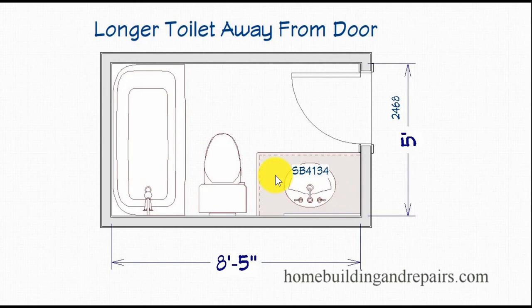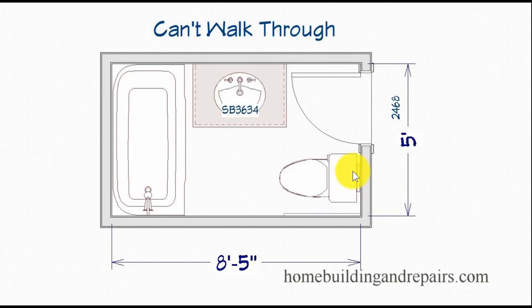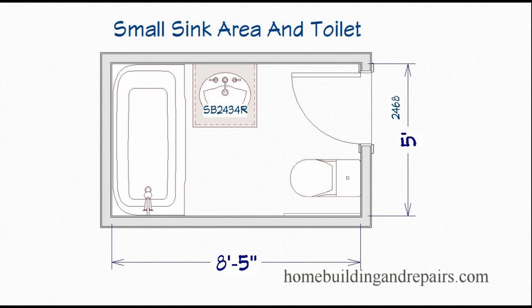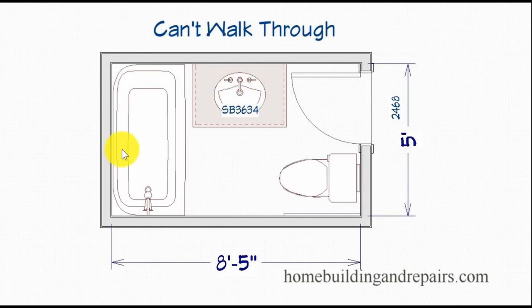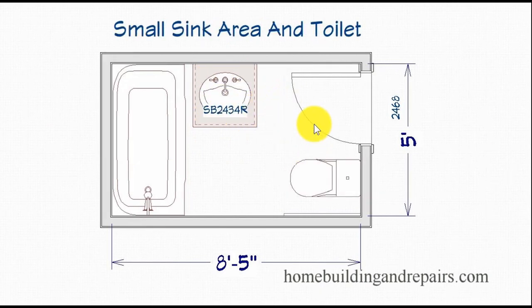This right here, we're back to the standard design that I showed you in the very beginning. This one here, you can't walk through. You're going to have a tight spot here. I'm not quite sure if this needs to be 21 inches, but I know the area in front of the toilet needs to be 21 inches. Here you have a smaller sink. I reduced the size of the sink cabinet, made it a little smaller to make the area a little easier to walk through.